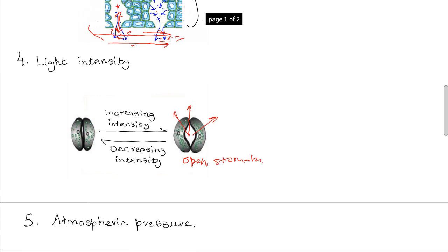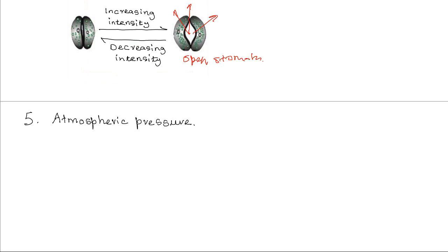The fifth factor is atmospheric pressure. The lower the atmospheric pressure, the greater the rate of evaporation, and the greater the rate of evaporation, the faster the rate of transpiration. Atmospheric pressure has an effect on the rate of evaporation, so when atmospheric pressure is low there is bound to be a higher rate of transpiration. Plants found at high altitudes where atmospheric pressure is very low, like the highlands, are likely to lose a lot of water due to the higher rate of transpiration. Such plants tend to have adaptations to minimize water loss, and many plants that grow at high altitude tend to have narrow or needle-like leaves to reduce the surface area exposed for transpiration.